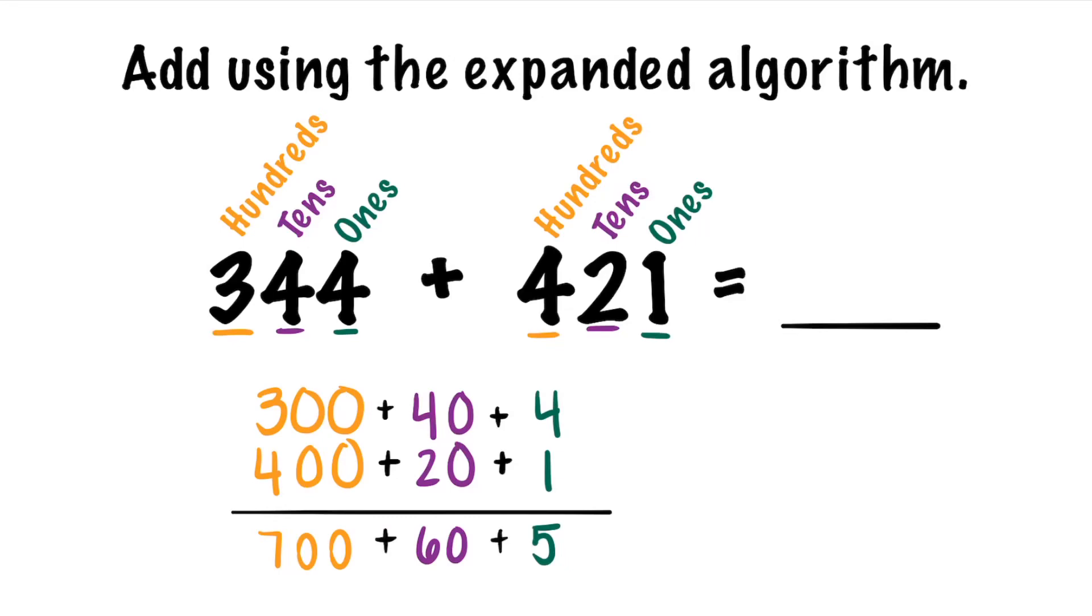Now we can join all those sums together and we get a total of 765. So we know the sum is 765.